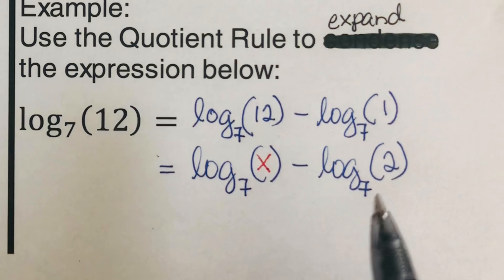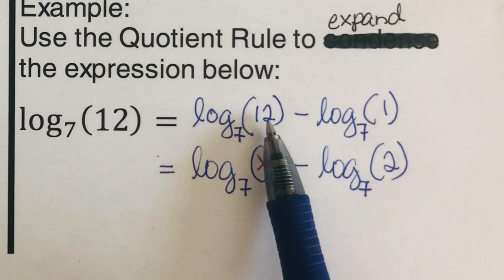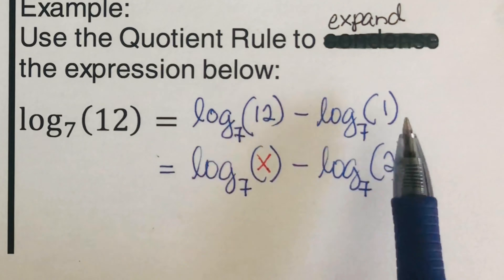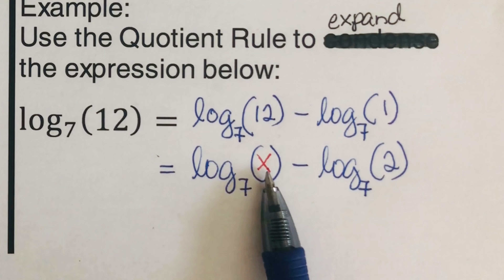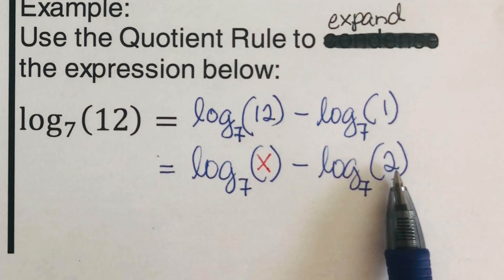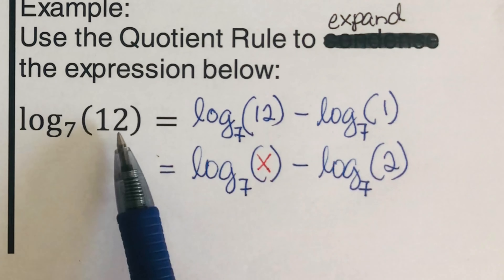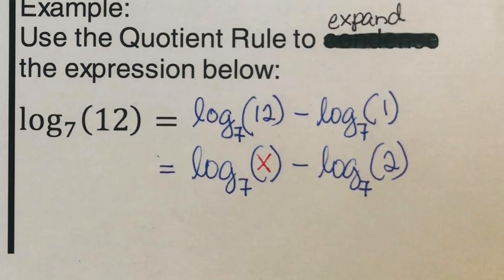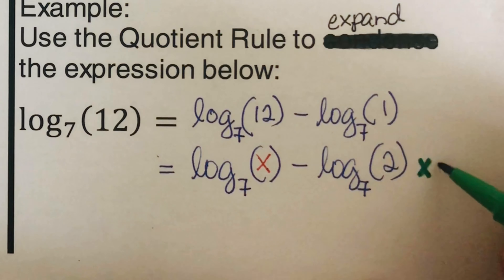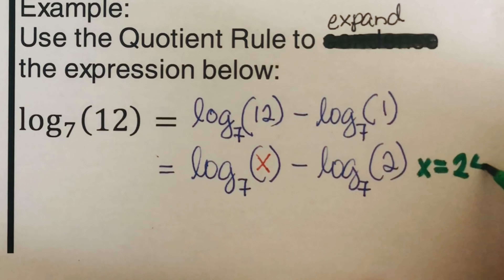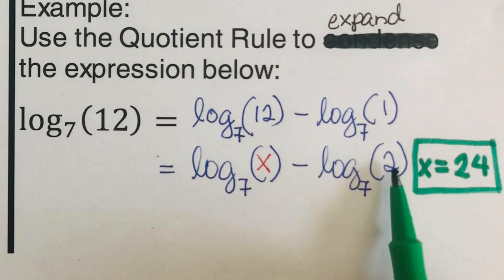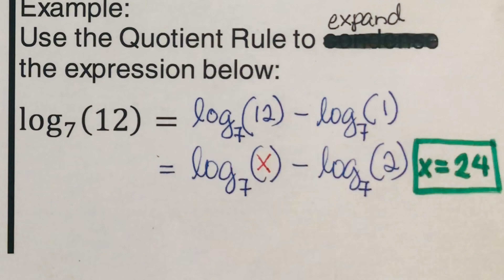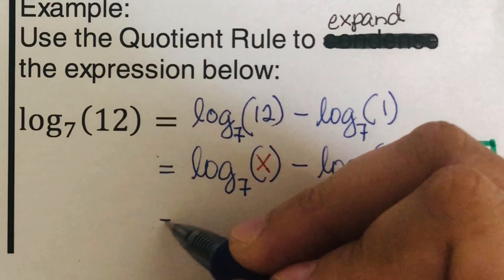What number divided by 2 gives us 12? That number is 24. So x equals 24, and we can write this as log of 24 to the base b minus log of 2 to the base b, since 24 divided by 2 is 12.